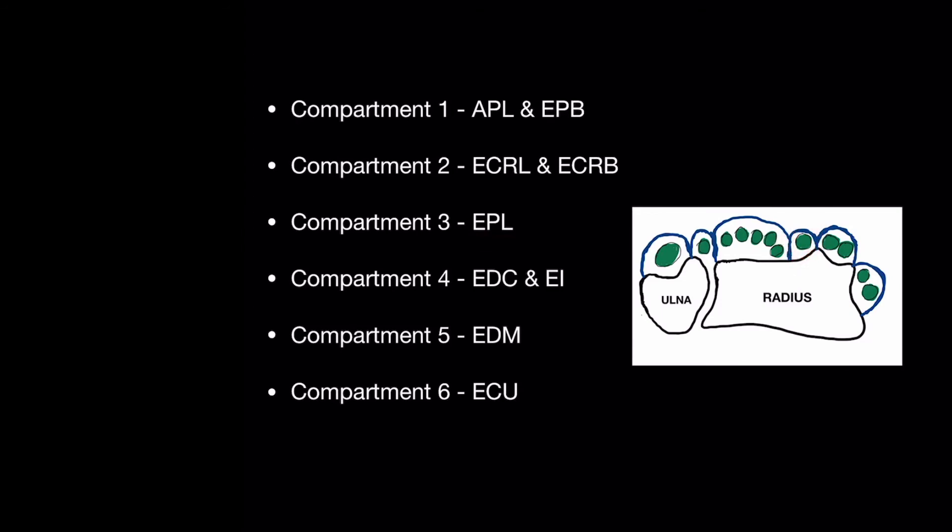And compartment 4 is EDC, the communis tendons to the fingers, and EI. 5 contains EDM to the little finger, and compartment 6 is the ulnar wrist extensor, extensor carpi ulnaris. These are the six extensor compartments of the dorsal wrist.